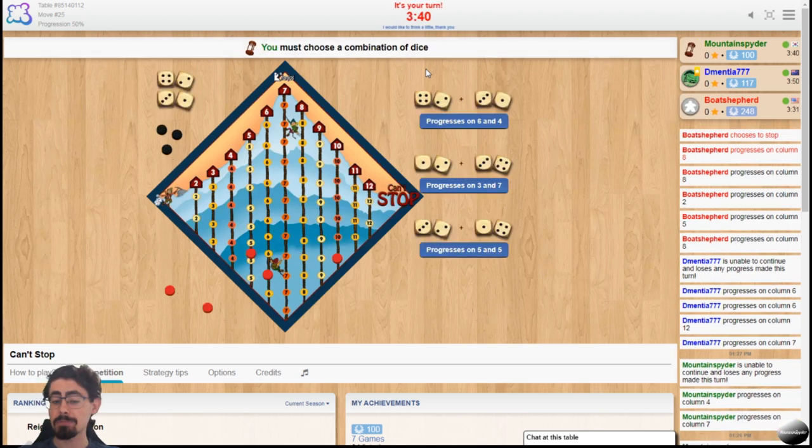Sometimes you get lucky, sometimes you don't. As you can see, our red player here has progressed quite nicely, as we've got a really decent spread across. So now, on my 2nd turn, I've rolled 6, 4, 3, 7, and 5, 5. Now, I quite like the idea of double progressing on 5, because this leaves me still 2 more tokens for my next roll.